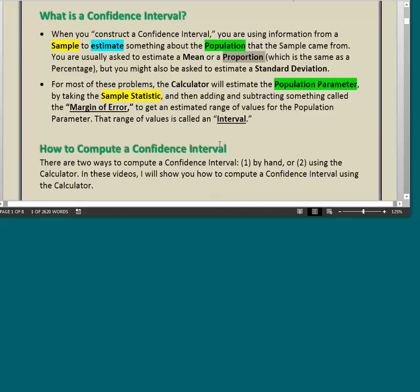Now we're talking about how to compute a confidence interval. There are two ways to compute a confidence interval: one, by hand, or two, using the calculator. In these videos, I will show you how to compute a confidence interval using the calculator. It's faster than doing it by hand, and frankly, it's more reliable.